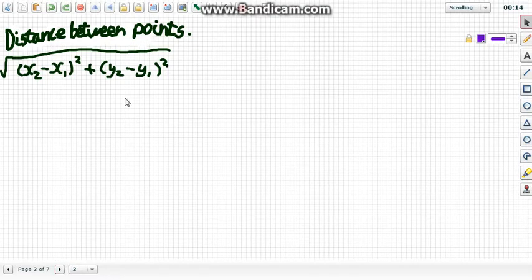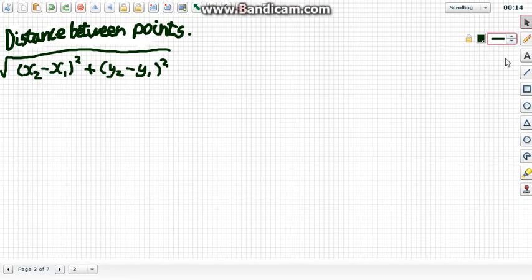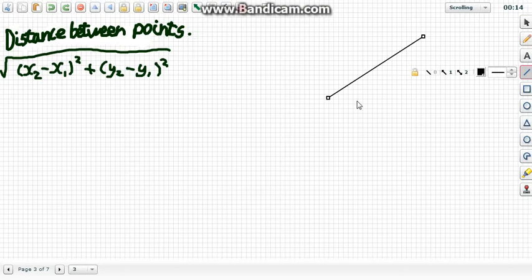The first one, the distance between points, is the square root of x2 minus x1 squared plus y2 minus y1 squared. Let's look into why this actually is. If we have ourselves a line with two random points, it doesn't matter.